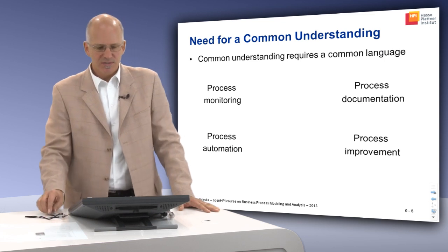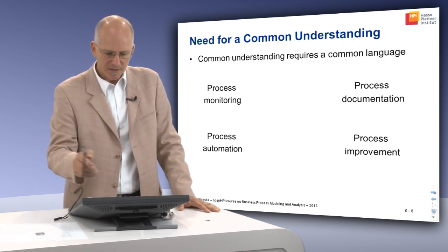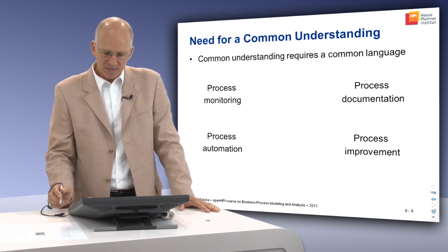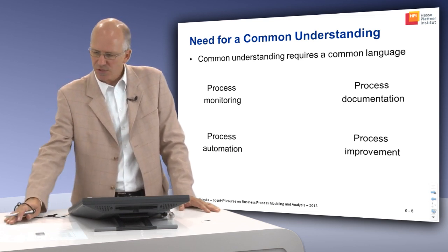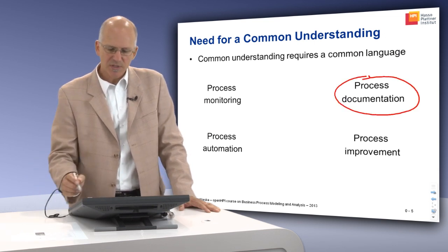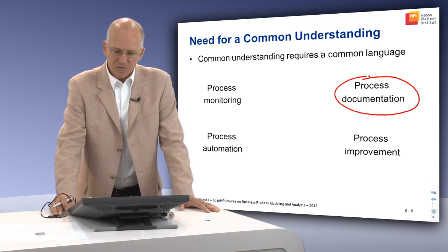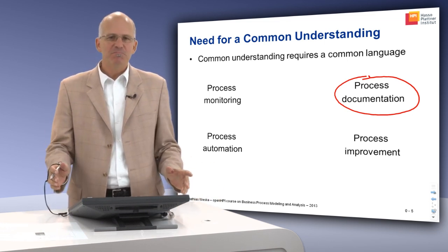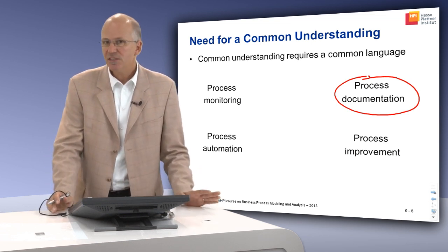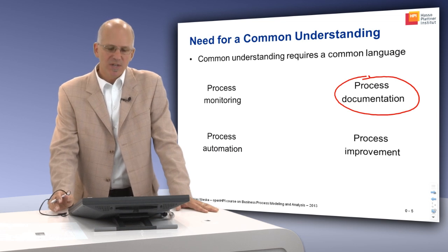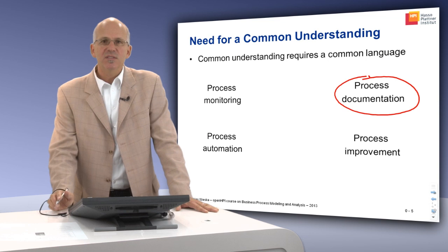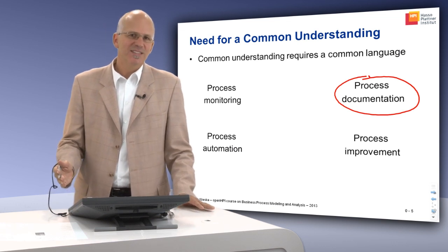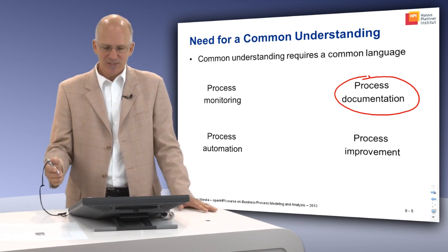This slide tries to motivate what this common language can be, and also shows four key activities important in most business process management projects. The first is process documentation: what are the main business processes and how can we describe them? Due to the lack of a common language, often just plain text or Excel sheets are used. Sometimes figures are drawn in presentation programs, but these figures do not have a precise semantics — they only have meaning for the person who designed them.